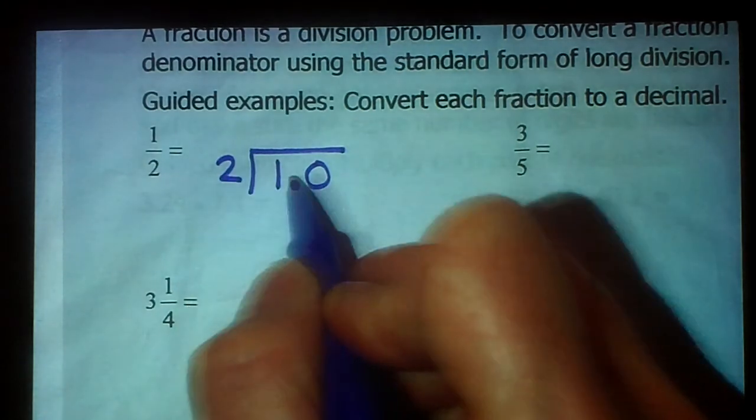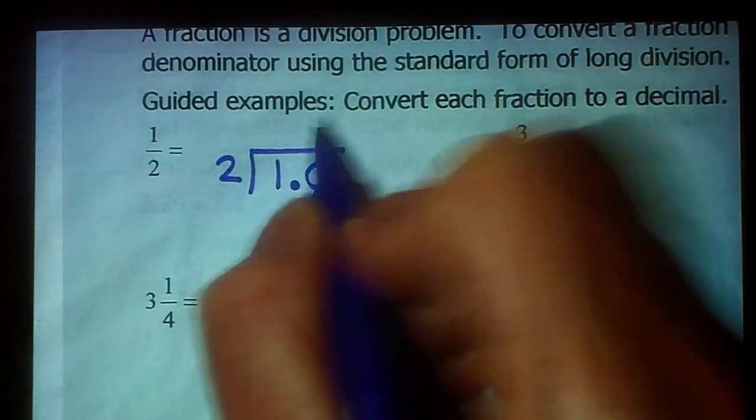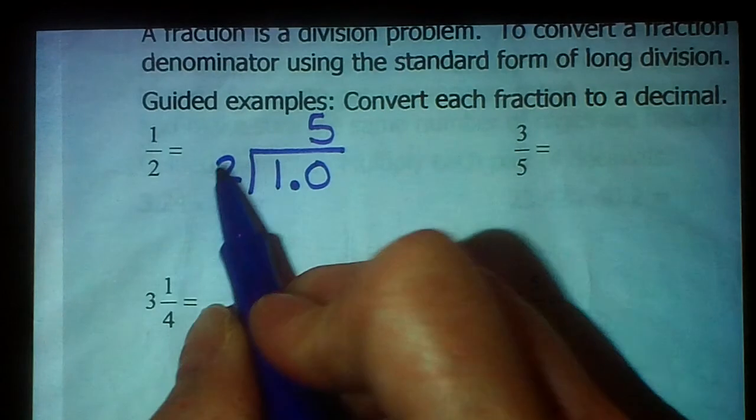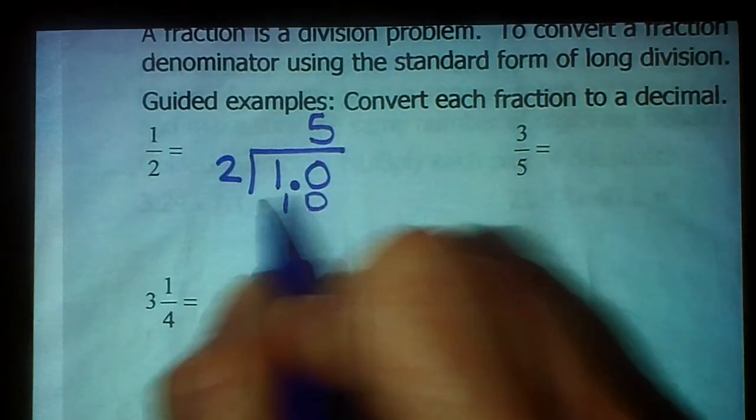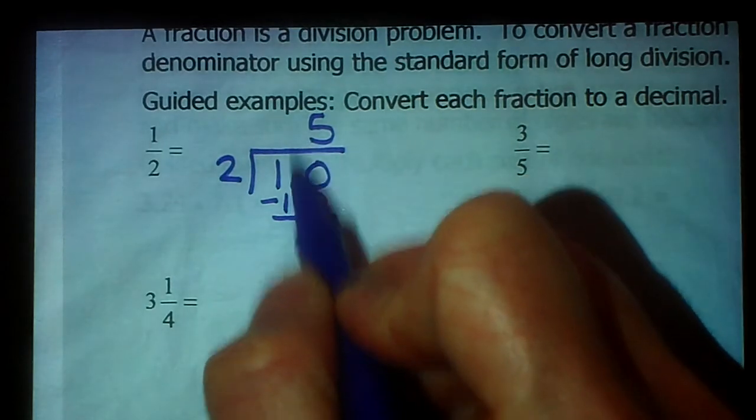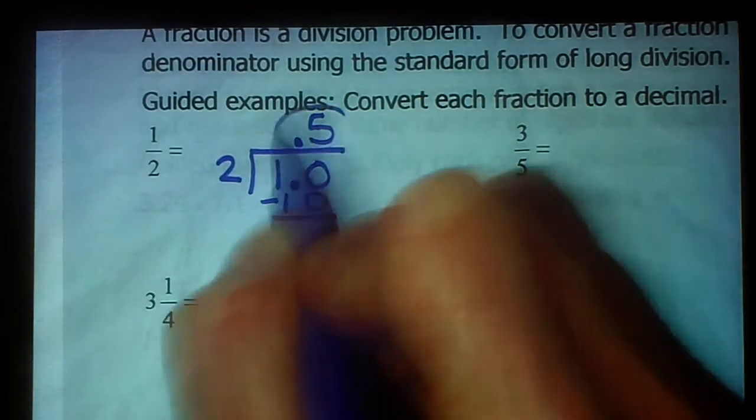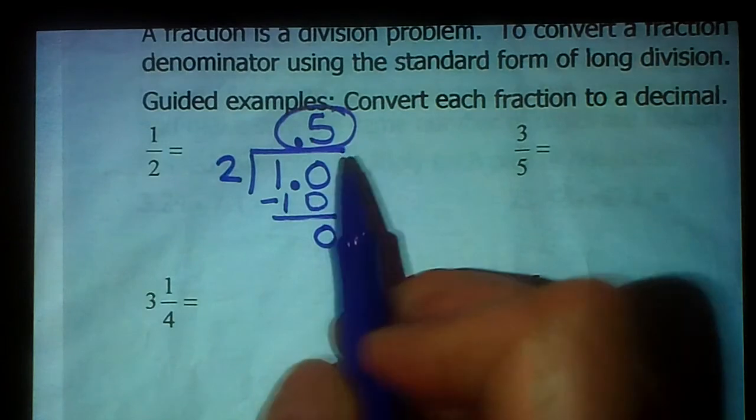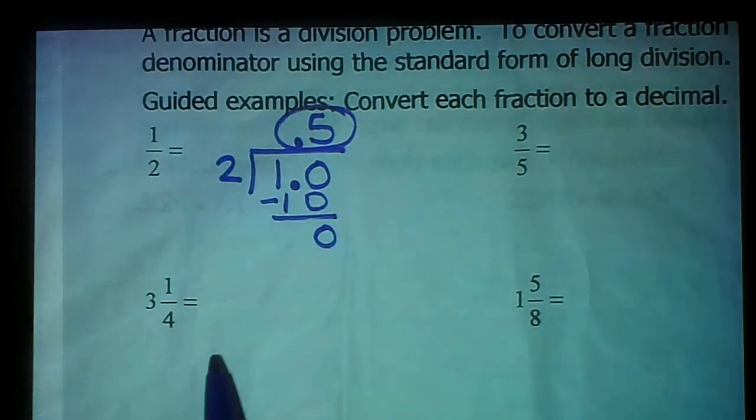Alright, 2 does go into 10. It goes into 10 five times. 2 times 5 is 10. 10 minus 10 is 0. So we're almost done. But see this decimal point here? We need to bring it up. So 1/2 is equivalent to 0.5. Alright, jump down here.